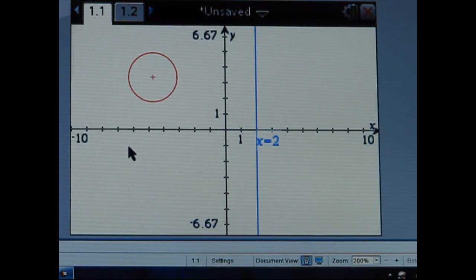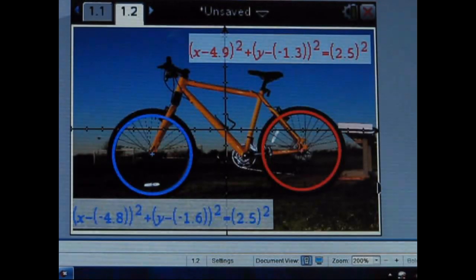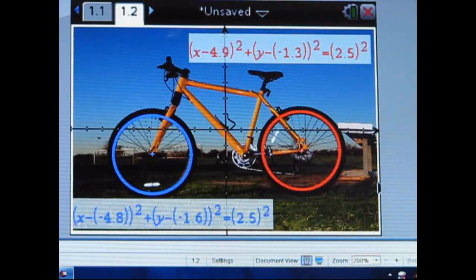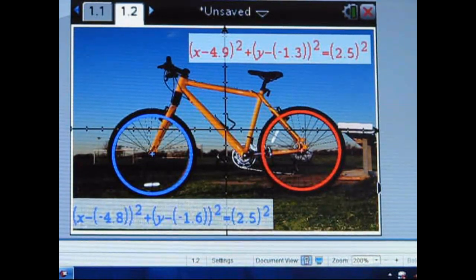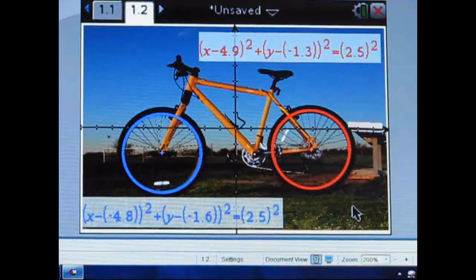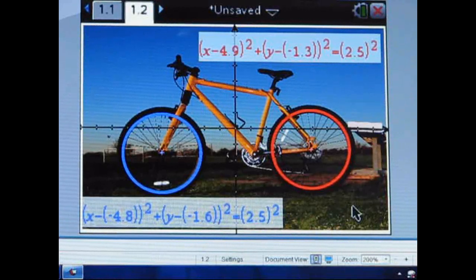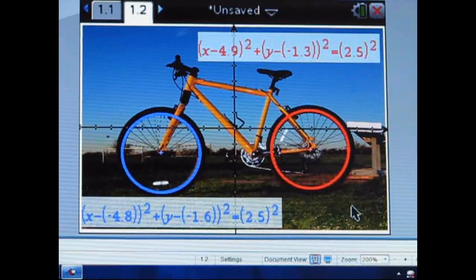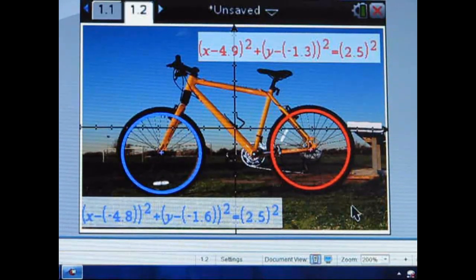Now another thing we can look at is overlaying the conics on top of an image. So if we go to our next page here, we can see we have a beautiful image of a bicycle and being able to look at the geometry that exists there. So being able to graph the circles as it relates to the bicycle and use it as kind of a very visual place for the students to explore the mathematics.